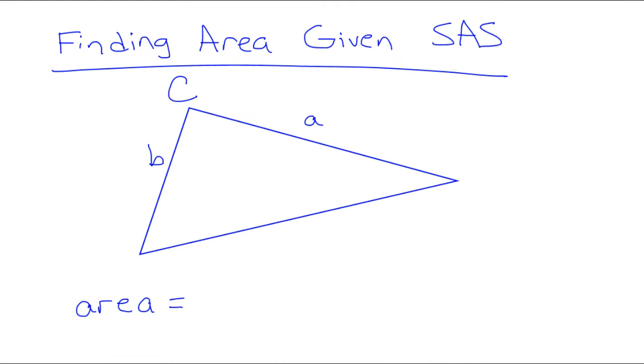We are going to be using the following formula. If you are given two sides and the included angle, in this case side a, side b, and the included angle C, the area is going to equal one-half the product of the two sides and the sine of the included angle.